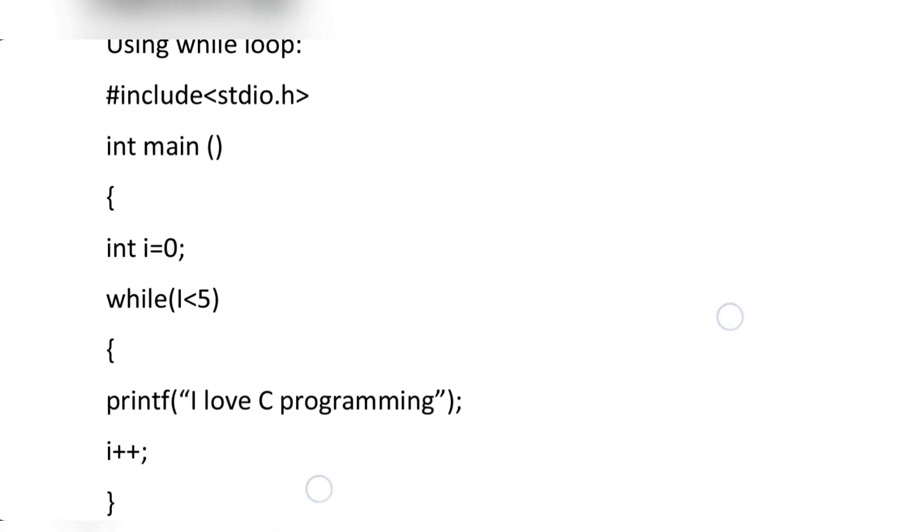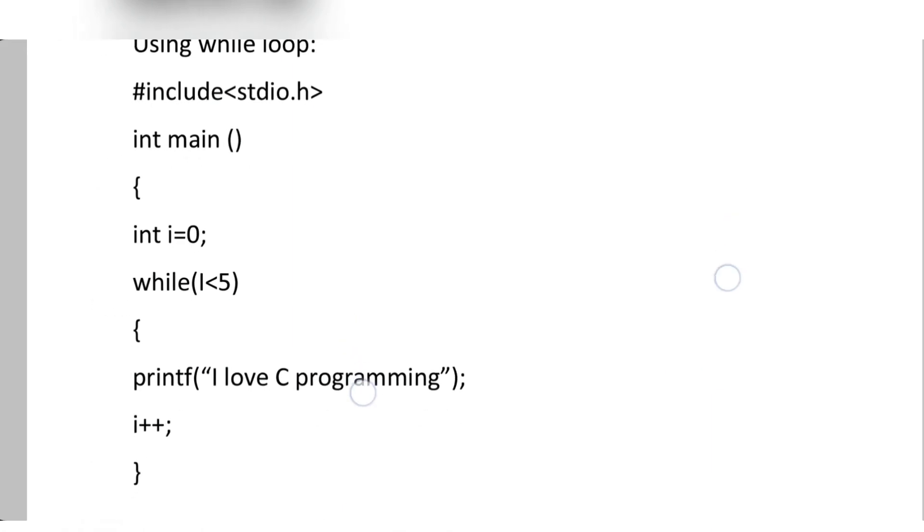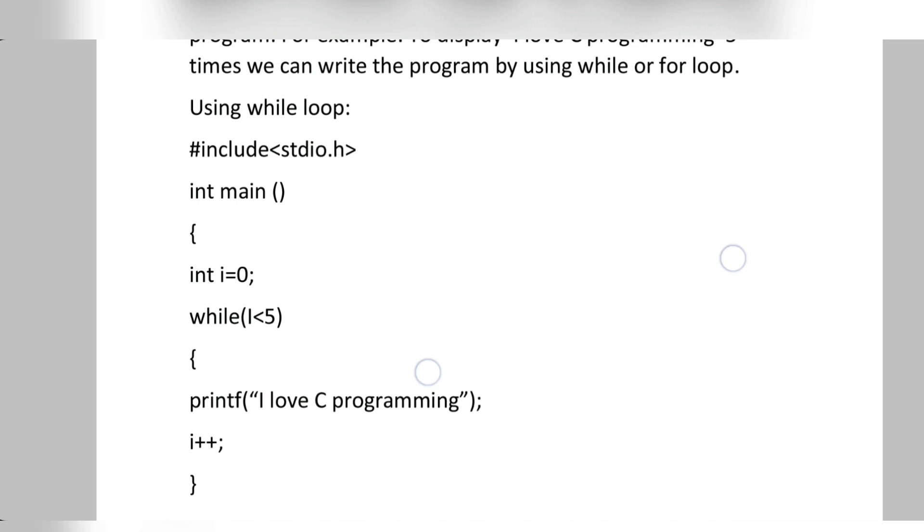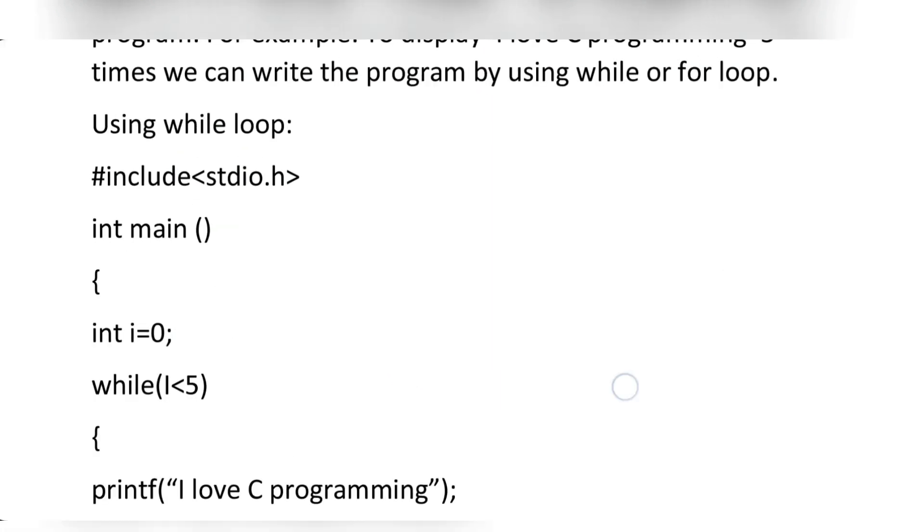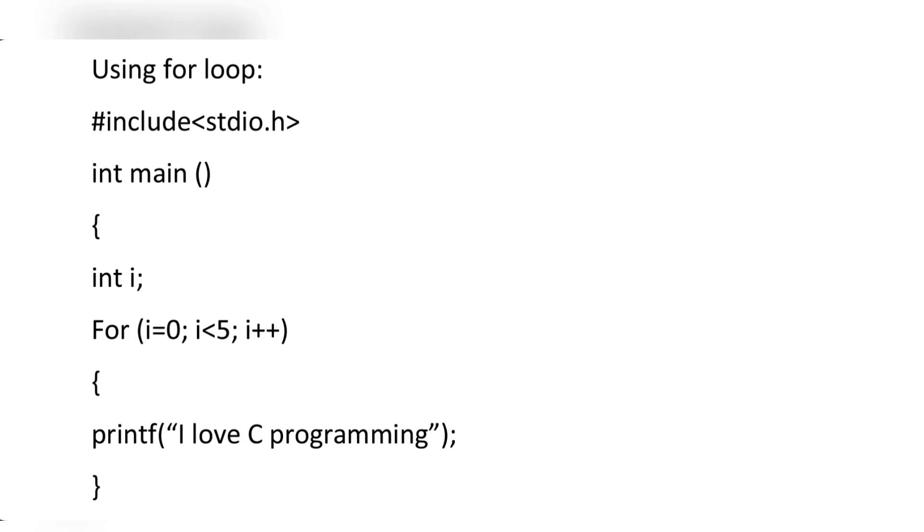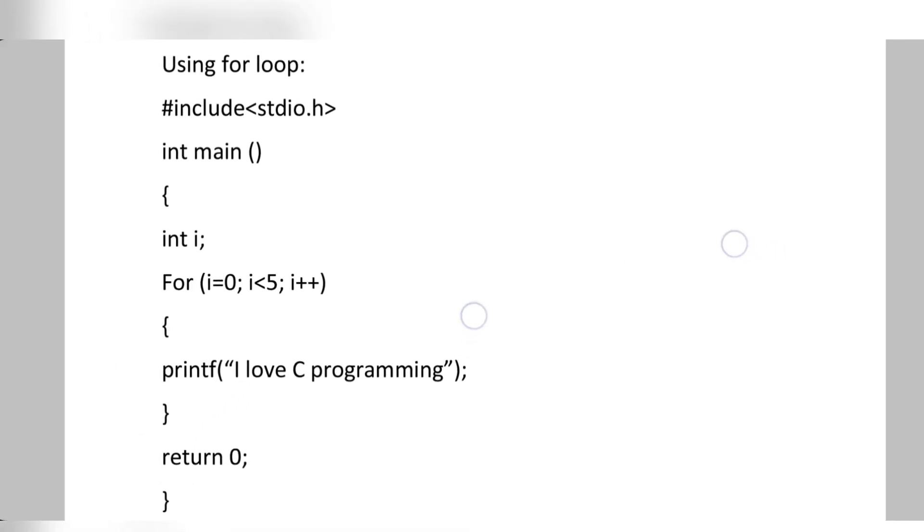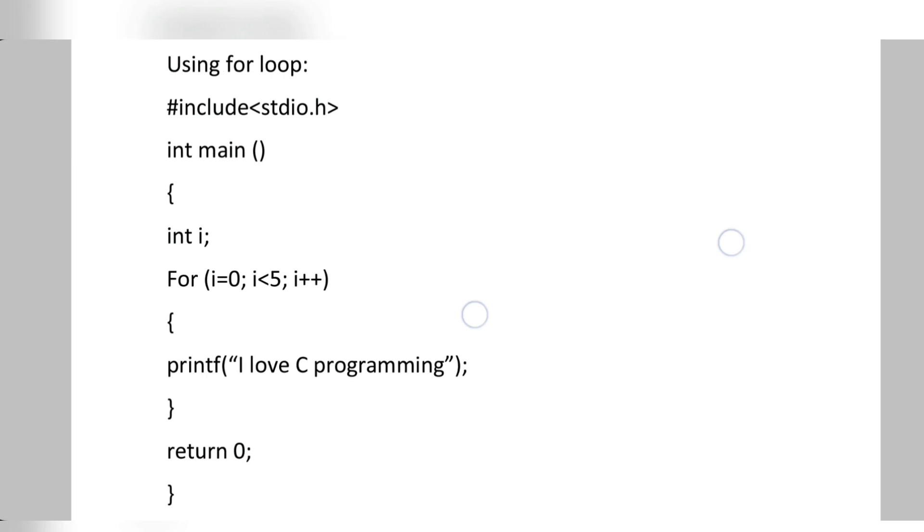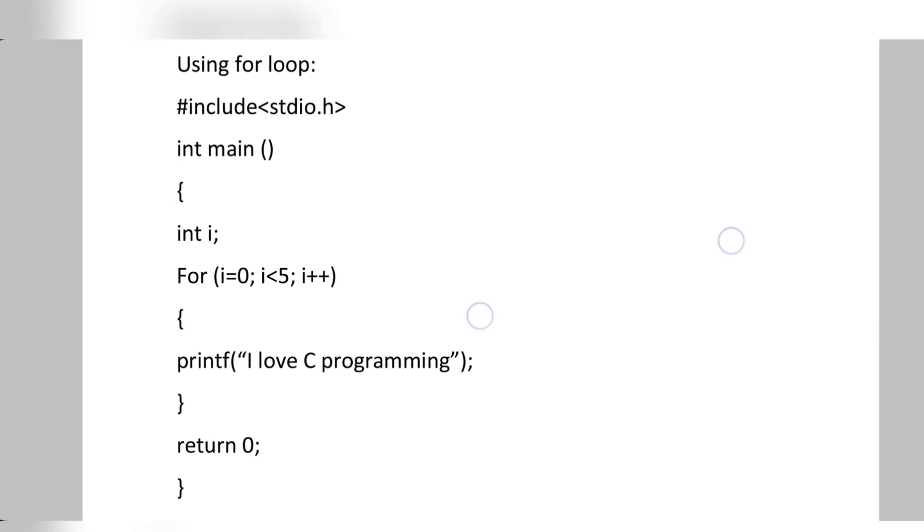I am minimizing the document so that you can have the full view. This will be the first program, and the same program in for loop will be like this way. In for loop we will write: include stdio.h, int main, int i, for i equals zero, i less than five, i plus plus, then 'I love C programming', bracket close, return zero, then bracket close.